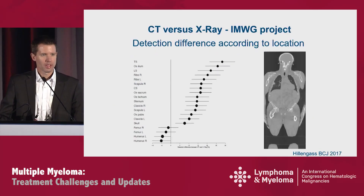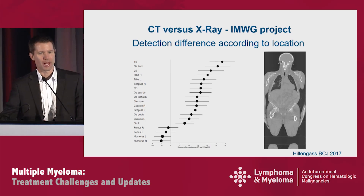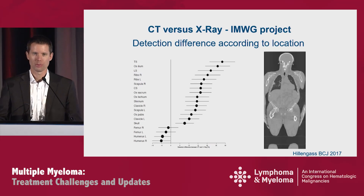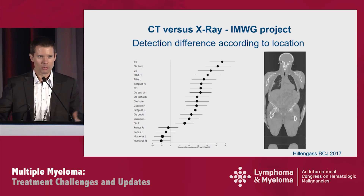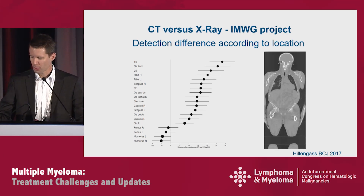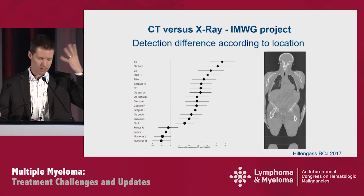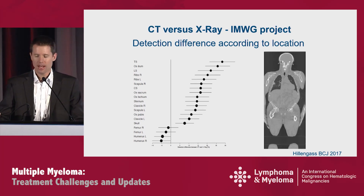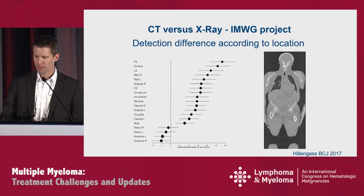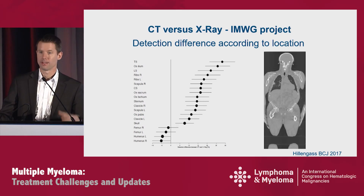Interestingly, we looked at where osteolytic lesions were located, and found that X-ray is not really worse — sometimes even better — in the appendicular skeleton. We don't have a CPT code yet for whole-body low-dose CT, which I'm promoting. If you don't have access to that, or the insurance gives you pushback, you can do a CT of the spine and pelvis and add the appendicular skeleton with X-ray if necessary. I still strongly promote whole-body low-dose CT, but at minimum the spine and pelvis should be done with CT.